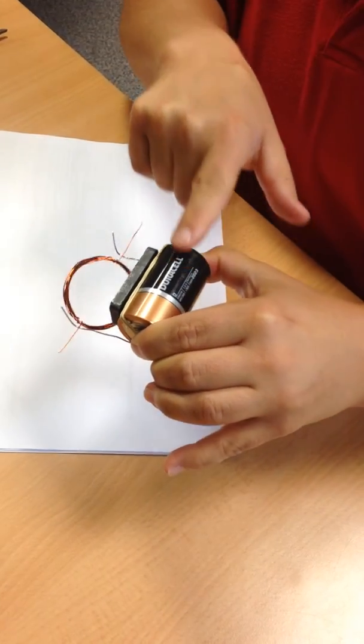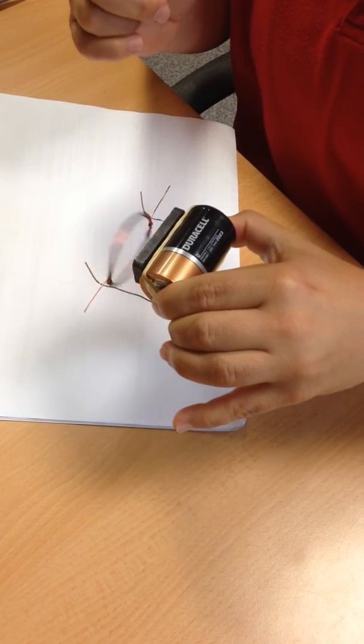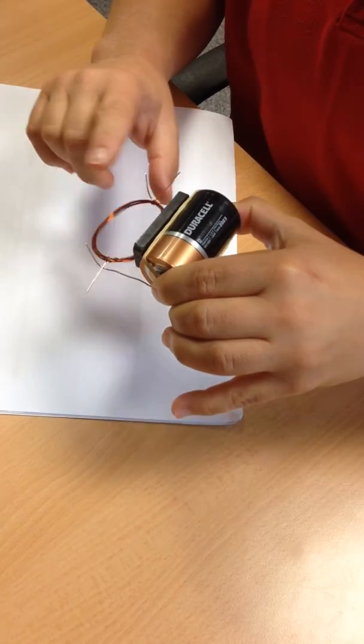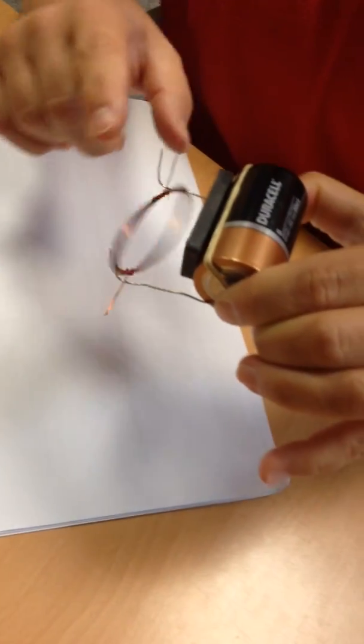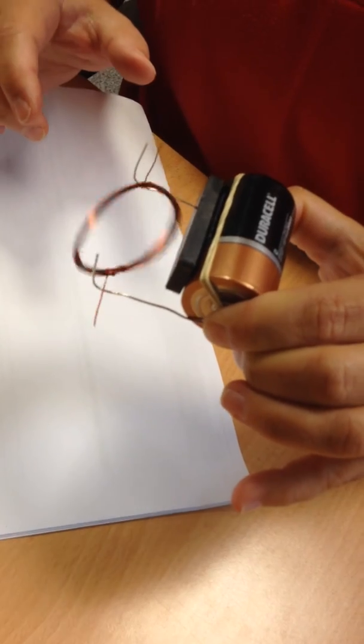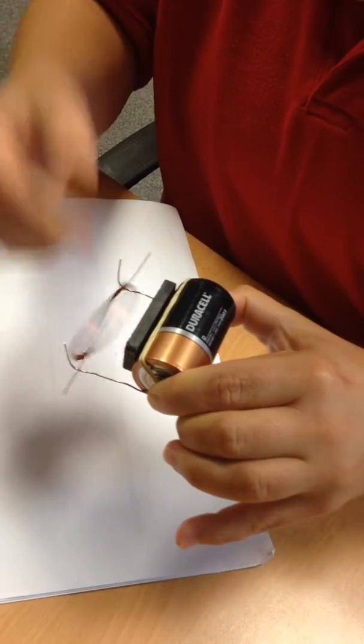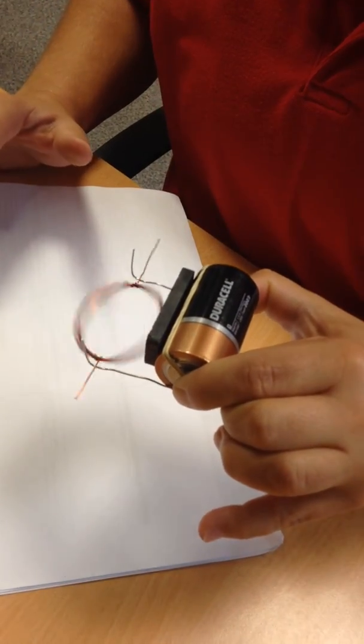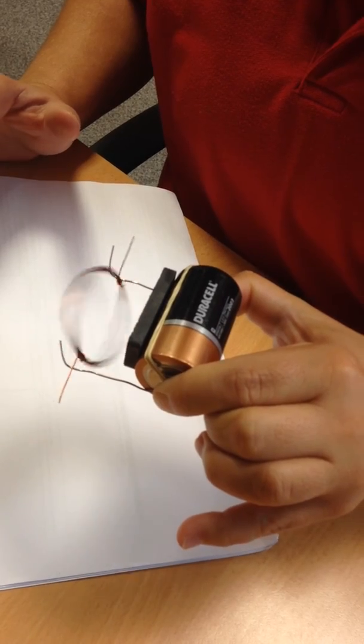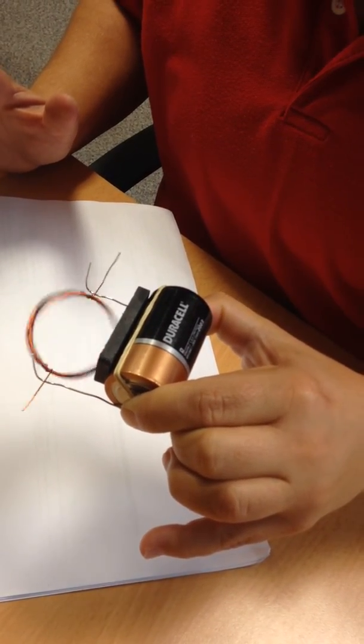Taking electrical energy and converting it. Oops, bumping into the magnet there. Converting it into mechanical energy to turn the coil. That's a bit slow. And it goes on its own. Because it's a motor. Thank you.